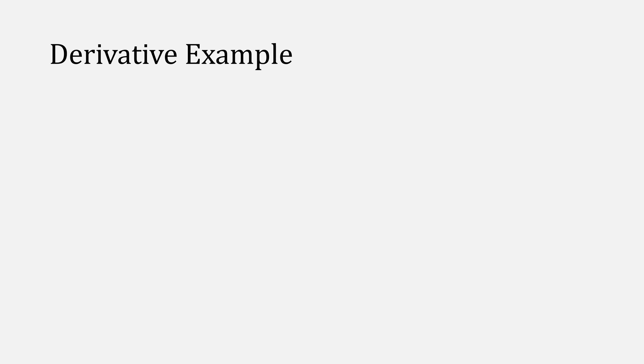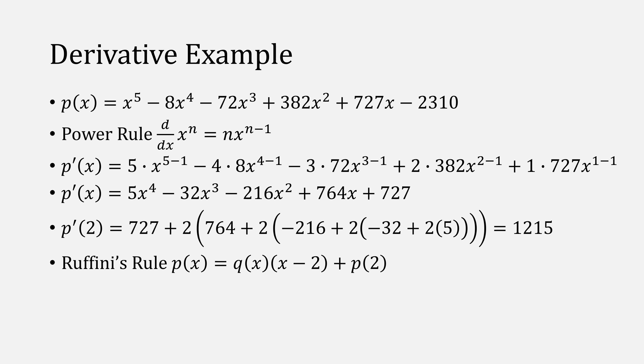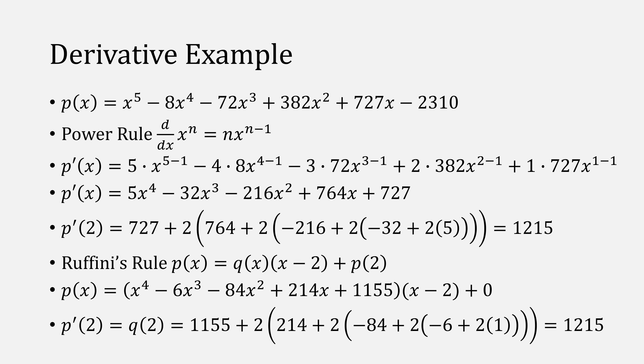Here's an example of the derivative process in action. Let's use our same polynomial and compute its derivative using the power rule, which is this, and which we can simplify to that polynomial there. If we evaluate at, say, the value of 2, we're given the value of 1215. If we use Ruffini's rule instead, we compute the quotient, then plug in 2, and this gives us the value of 1215.